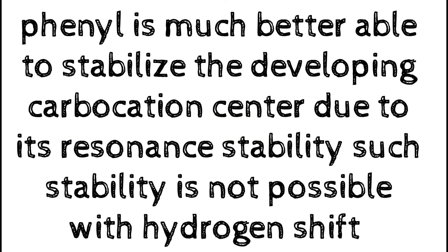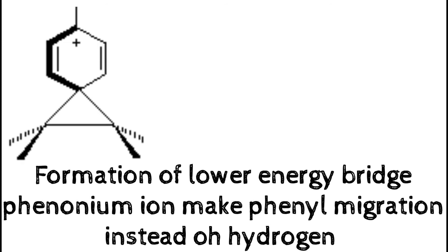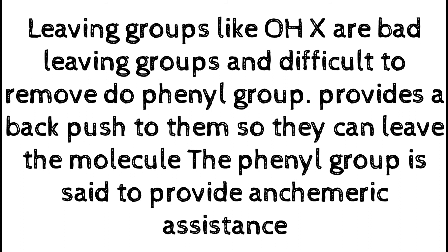The phenyl group provides backpush and forms a phenonium ion, which is highly stable. This way it becomes a carbocation and proceeds to the product. Phenyl is much better able to stabilize the developing carbocation center due to its resonance stability. Such stability is not possible with a hydrogen shift. The phenonium ion is a lower energy bridge — a lower energy transition state — which is stable, whereas hydrogen does not provide this stability. So phenyl migrates in preference to hydrogen.